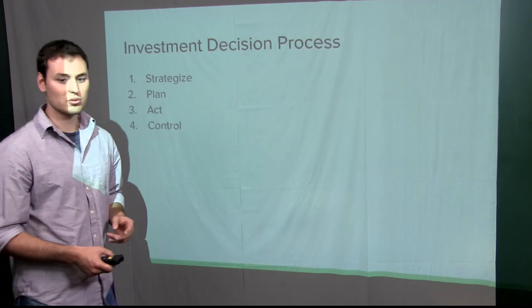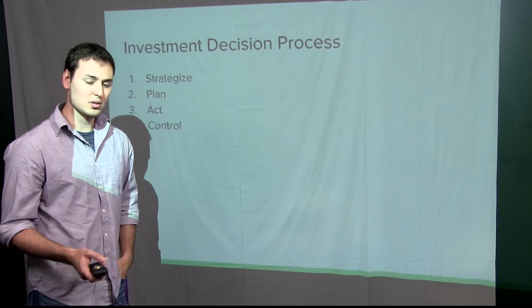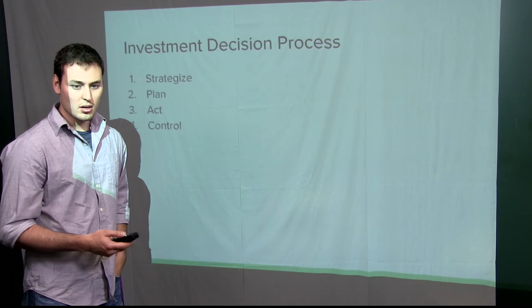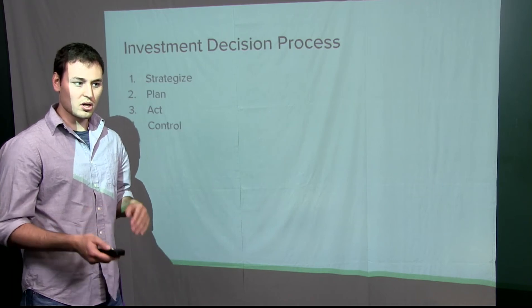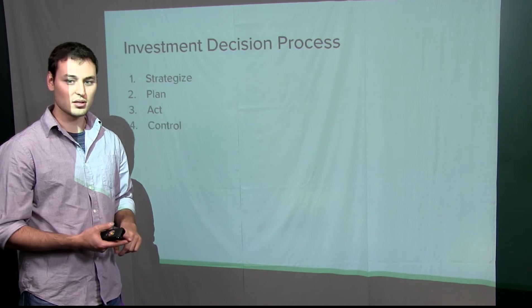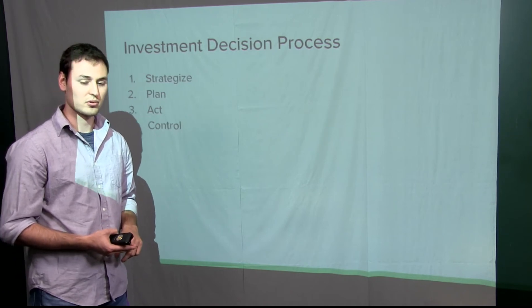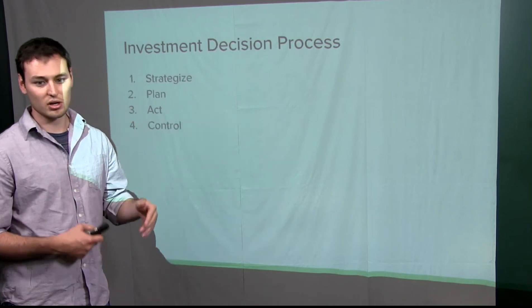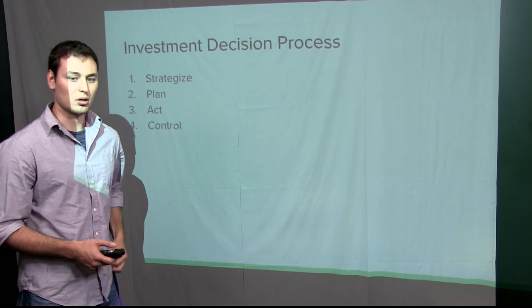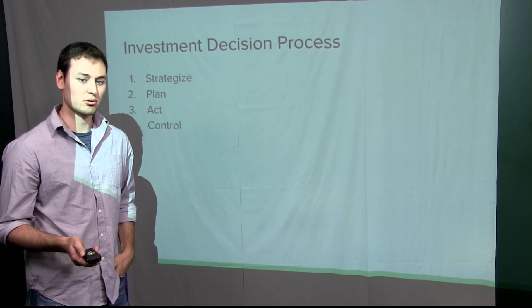The first two measures are often used as screening tools, primarily because they don't account for the time value of money. The two methods I'm talking about are the payback method and the accounting rate of return method. Once we've gotten past this screening process, we move on to our other two measures: net present value and the internal rate of return.